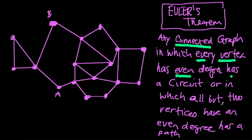So you have a path when all but two vertices have an even degree, and you have a circuit when every vertex has an even degree. So how do you prove this?